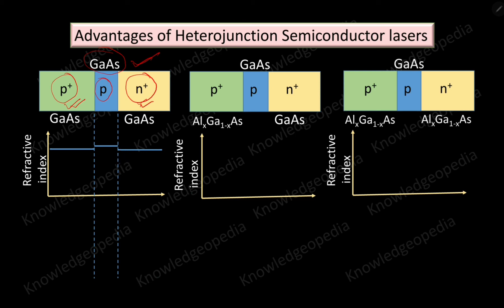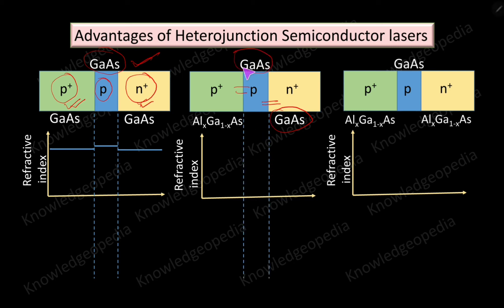Coming to the single heterojunction semiconductor laser: on one side, both the active region and the n-plus region are gallium arsenide, so the variation in refractive index is small — similar to the homojunction case. However, at the heterojunction side, the p-plus region is aluminum gallium arsenide. Since the refractive index of gallium arsenide is larger than that of aluminum gallium arsenide, there is a large variation in refractive indices at this heterojunction. This is clearly visible in the refractive index profile.